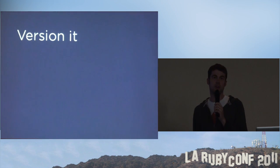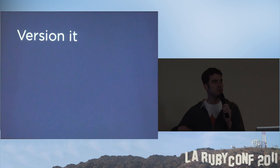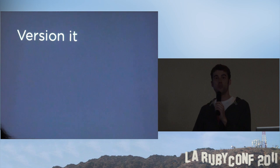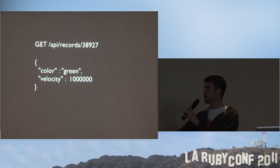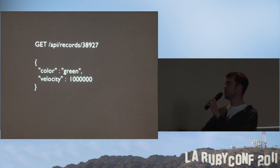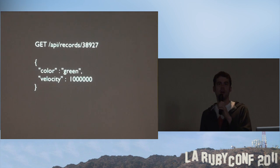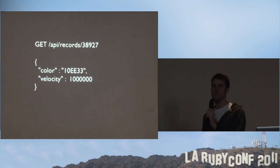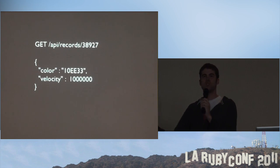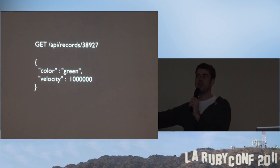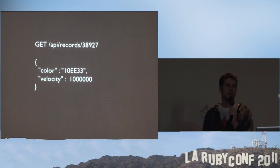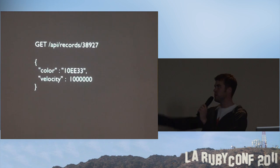First, you should version your API — and do it early in the life of the API. The reason is this: let's say you have an API that returns a color as a string, like 'green.' What if you want to change that to returning green as a hex value? If everyone is depending on your code to behave the old way, their applications are going to start breaking and get unexpected behavior.